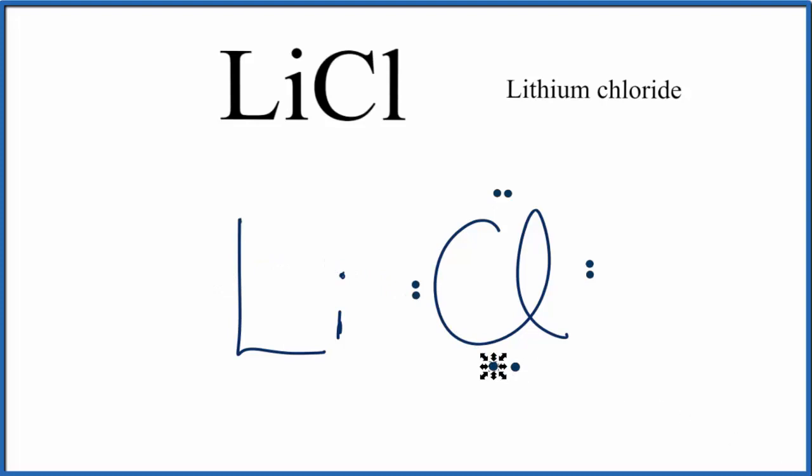And when it does that, since it's lost the electron, the negative, it becomes positive. So we'll put brackets around lithium to show that it's an ion with a positive sign outside.